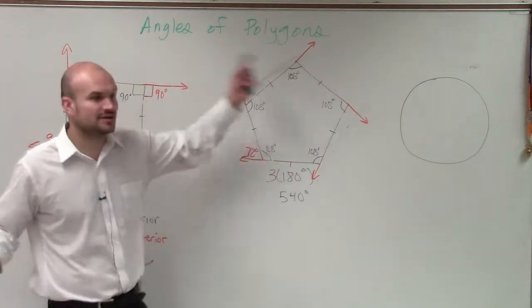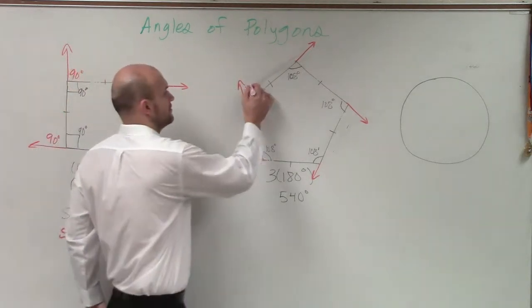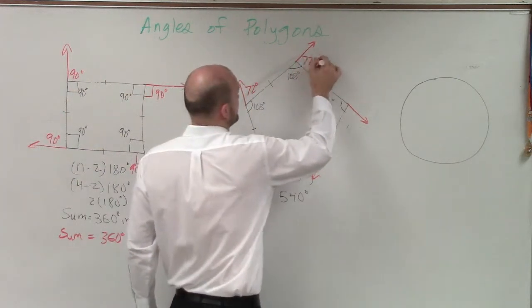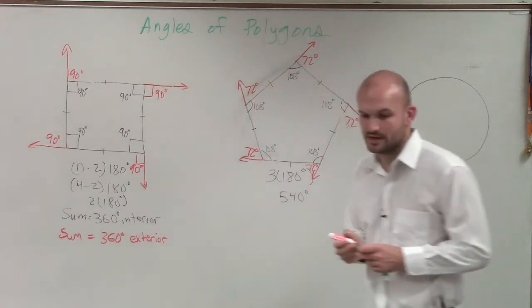So that's 72 degrees. Now remember, all these angles are equal. So what would you say this one is? 72. 72. 72. 72.